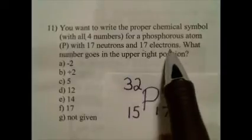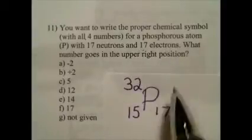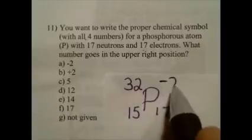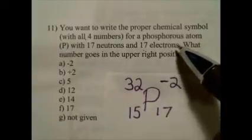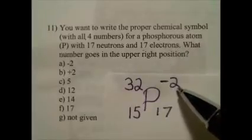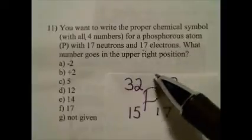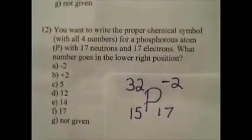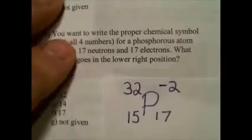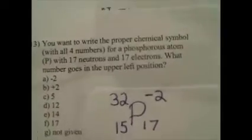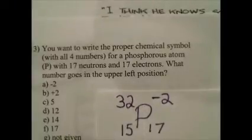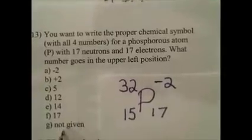With 17 electrons — 17 negative things — and 15 positive protons, those combine to make a net charge of negative two. We have two more electrons than protons, so the upper right is negative two. Number eleven answer: upper right is negative two, option A. Number twelve: lower right is 17, option F. Number thirteen: upper left is 32, and that is not given — option G.